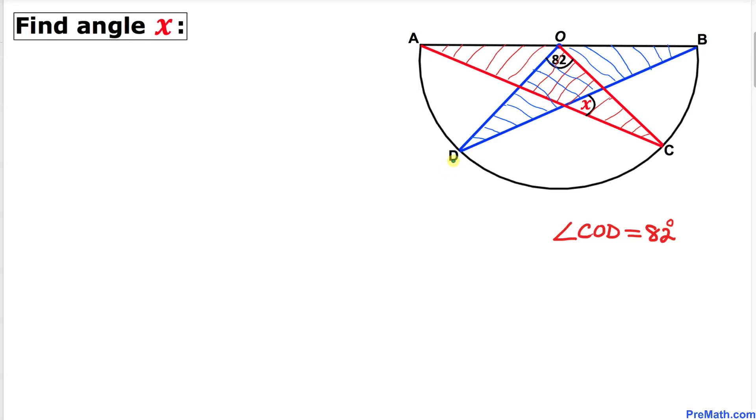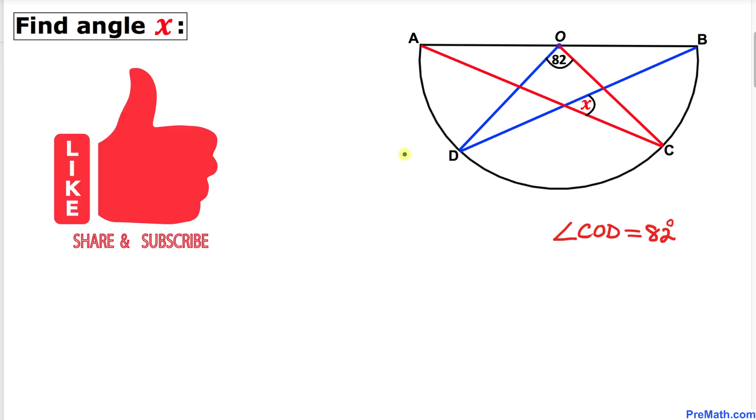Welcome to PreMath. In this video tutorial, we have a semicircle with center O such that two triangles are intersecting each other inside this semicircle. As you can see in this figure, angle COD is 82 degrees, and we are going to calculate angle X. Please don't forget to give a thumbs up and subscribe to my channel.